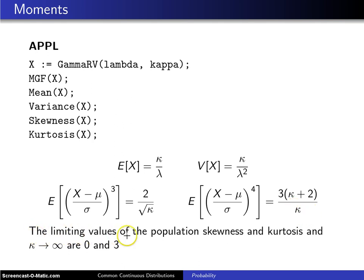The other thing that's interesting to look at is what happens to the skewness and the kurtosis as kappa goes to infinity. Well, the skewness goes to 0. Interesting in that as the parameter kappa gets larger and larger, this looks a little more like a symmetric distribution.